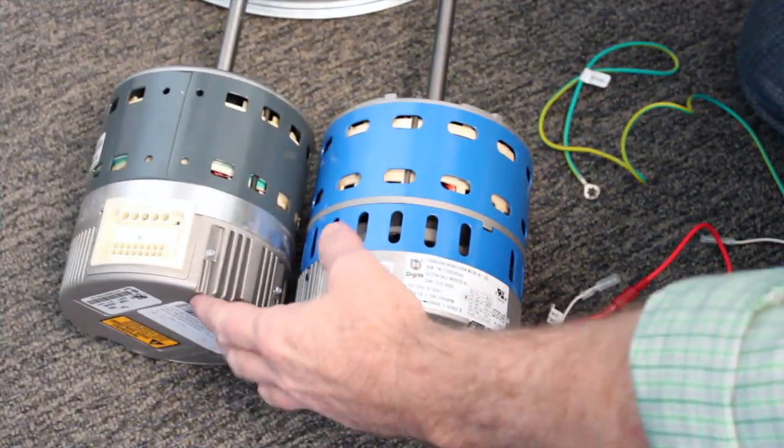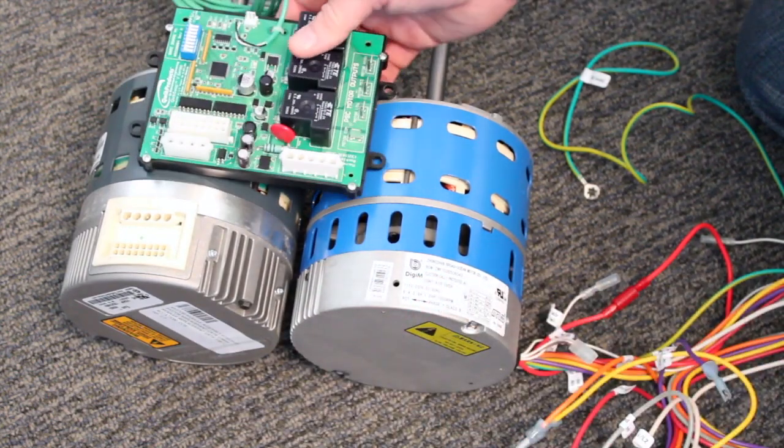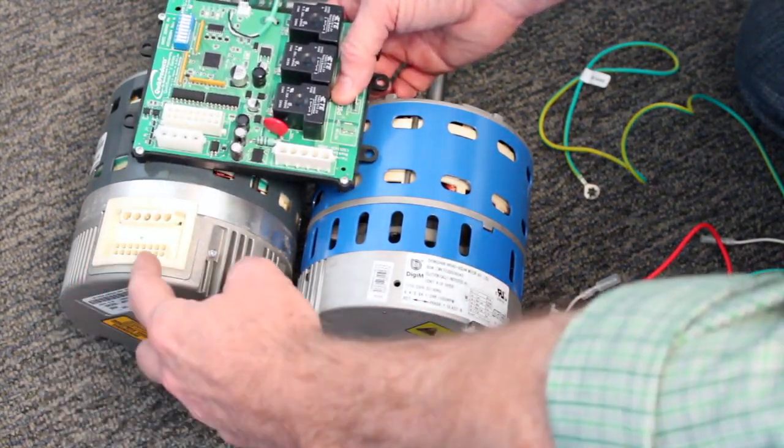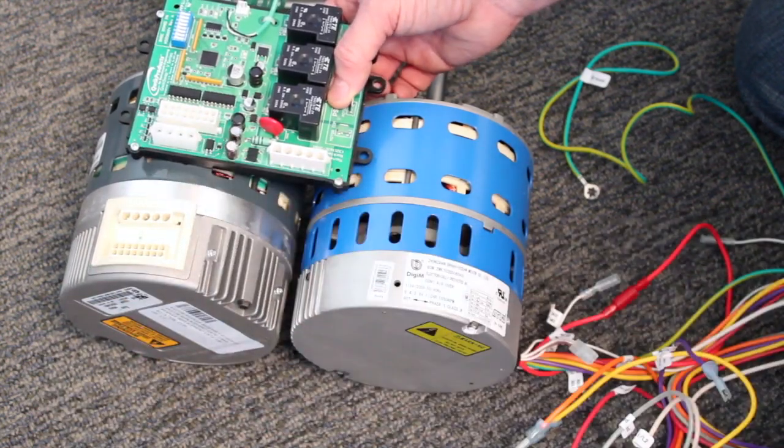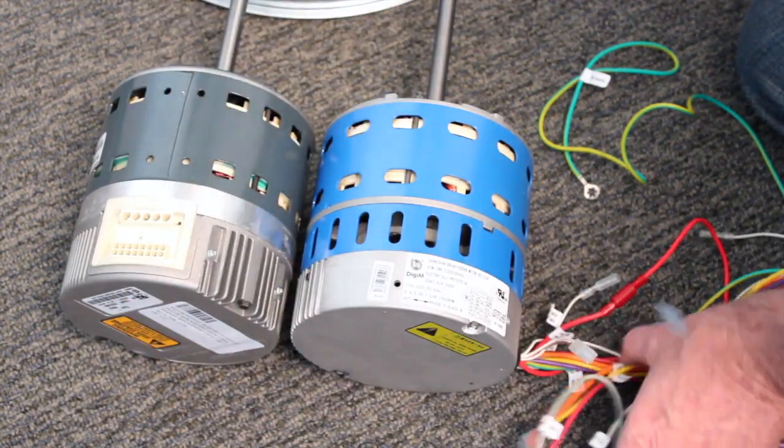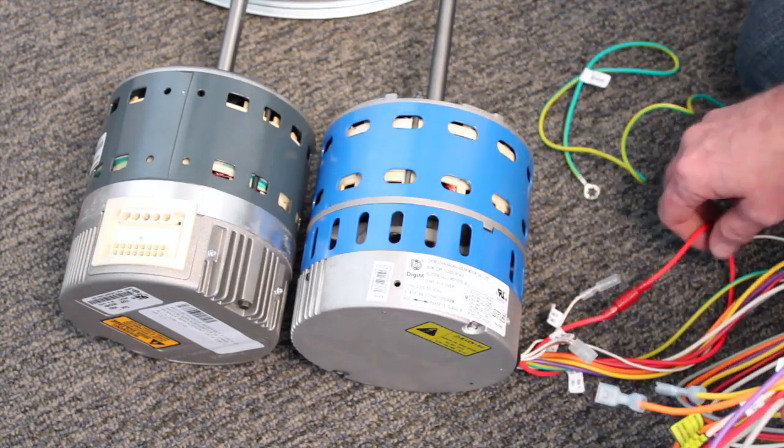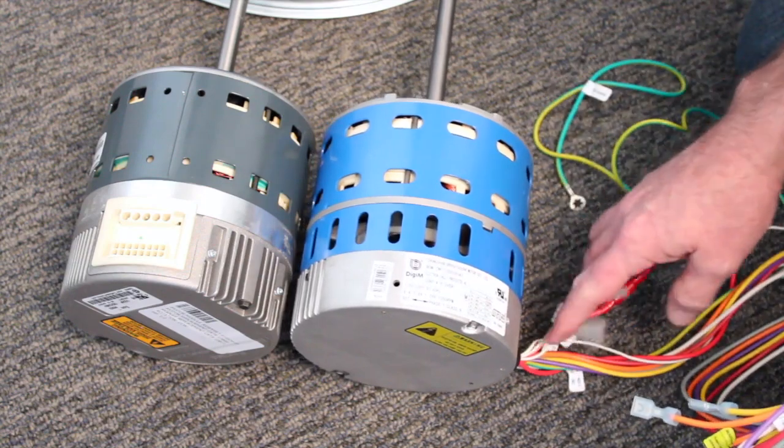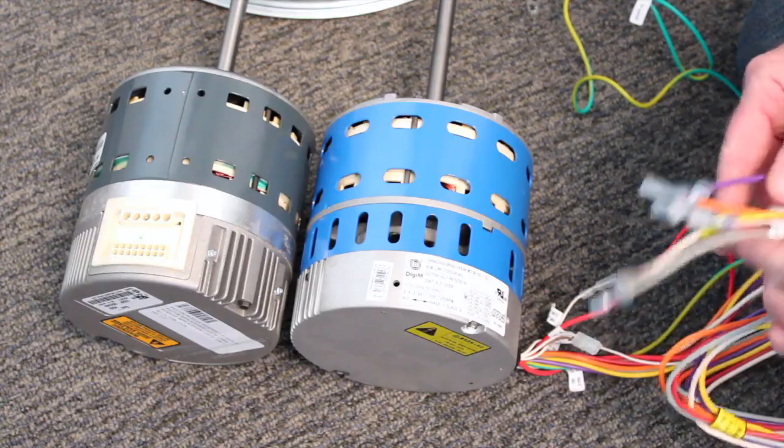I've got the 2.3 motor out next to the Azure motor. Here's the QuickSwap board. Remember, the factory harnesses that plug into this motor will now plug into QuickSwap and then the Azure motor will connect up to the QuickSwap board. On the Azure motor, we have a voltage jumper, we have a rotation jumper, a ground wire, a neutral, and some speed taps.